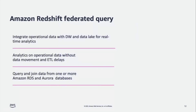Federated query exposes metadata from source databases through system views and driver APIs, which allows business intelligence tools like Tableau and Amazon QuickSight to connect to Amazon Redshift and query data in relational databases without making local copies. Federated query also enables real-time data integration and simplified ETL processing. You can connect live data sources in Amazon Redshift to provide real-time reporting and analysis. Previously, you needed to extract data from your relational database to Amazon S3 and load it to Amazon Redshift using copy, or query it from Amazon S3 with Amazon Redshift Spectrum.